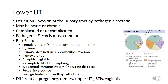Cystitis, or lower urinary tract infection, occurs when there's invasion of the urinary tract by pathogenic bacteria. This usually occurs as a result of contamination from the patient's own gastrointestinal tract and also when there's an elevated pH of the urine, which creates a medium in which bacteria can grow and proliferate.